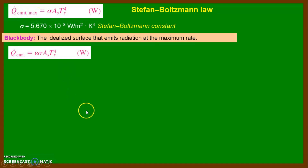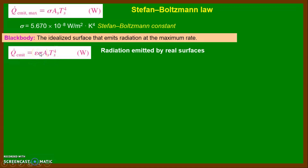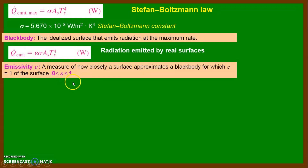If the body is not a black body, we use the generalized equation: Q-dot emit equals ε·σ·As·Ts⁴. The new quantity ε is the emissivity — a measure of how closely a surface approaches black body emission. For a black body, emissivity is 1; for a white body, emissivity is 0.